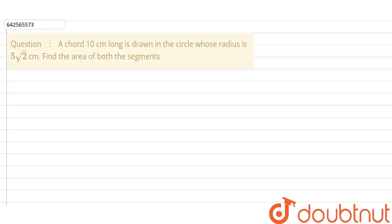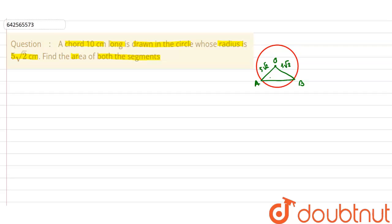Today's question says that a chord 10 centimeters long is drawn in a circle whose radius is 5√2 centimeters. We need to find the area of both segments. Let us draw the diagram — we have a circle with center O, and two radii OA and OB touching the chord at points A and B. The radius is 5√2 cm on both sides, and the length of the chord AB is 10 cm.